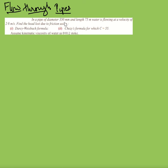In a pipe of diameter 350 mm and length 75 meters, water is flowing at a velocity of 2.8 meters per second. Find the head loss due to friction using the Darcy-Weisbach formula and Chezy's formula, for which Chezy's constant equals 55. Assume kinematic viscosity of water is 0.012 stokes.